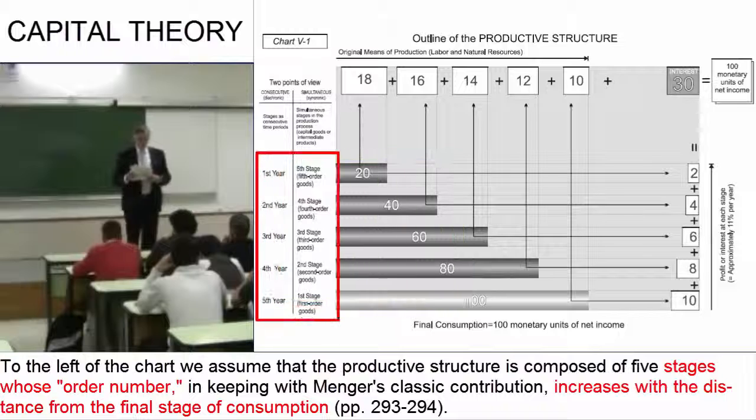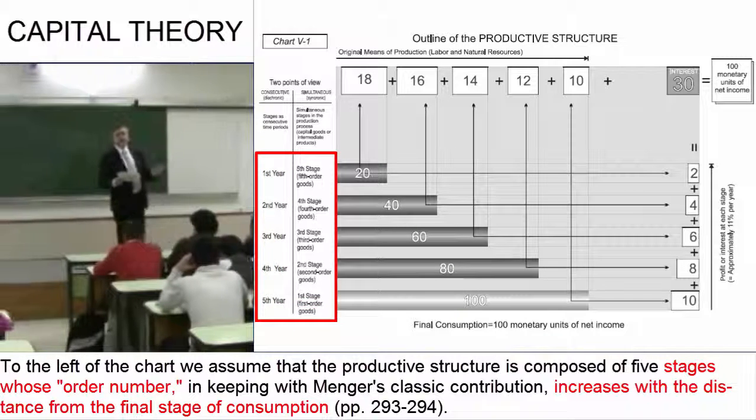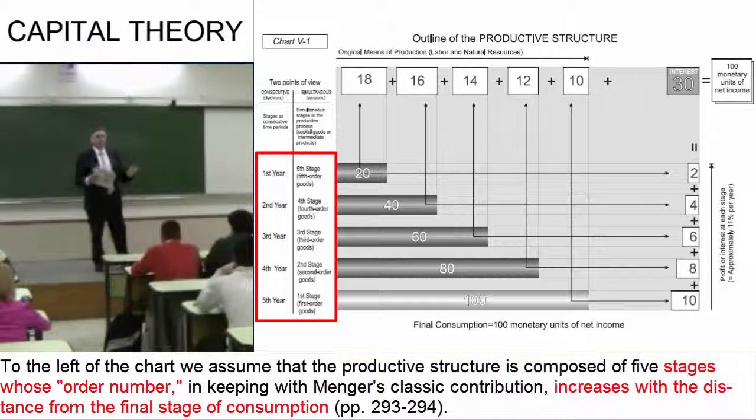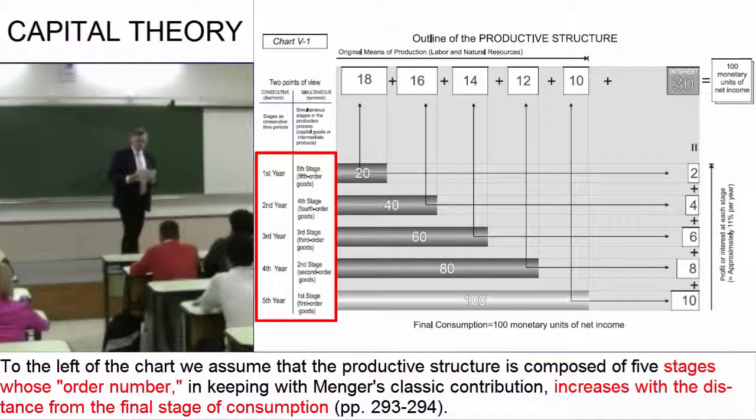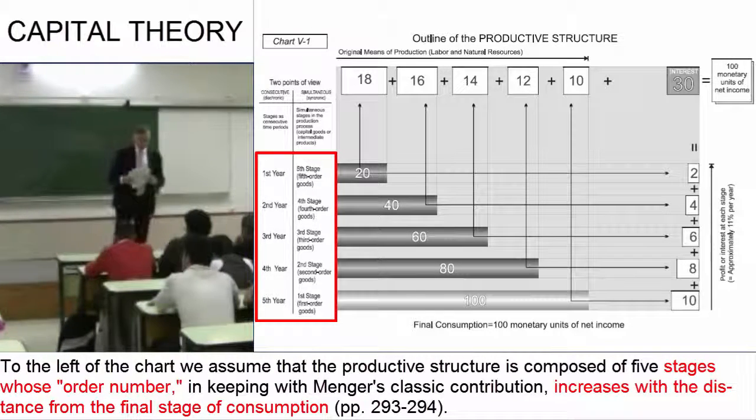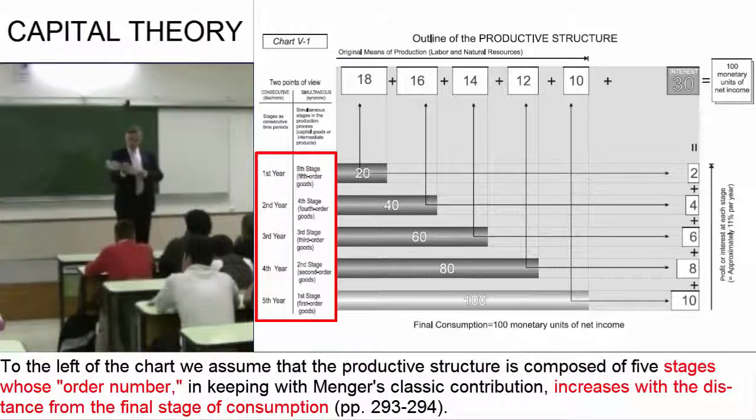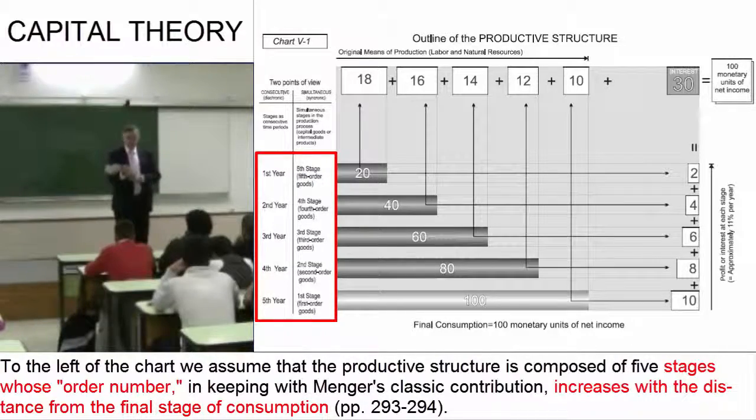Well, here I have assumed, in order to simplify matters, that the production process comprises five stages, each of which lasts one year. Stage 1, stage 2, stage 3, and so on.